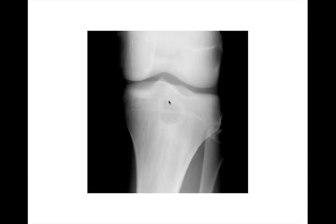Another radiograph of the knee: geographic lytic lesion, narrow zone of transition, sclerotic border, occurring right at the epiphyseal-metaphyseal junction. Part of the lesion is on one side, part on the other. This was actually a Brody's abscess — centrally located in the epiphysis and metaphysis of the proximal tibia.